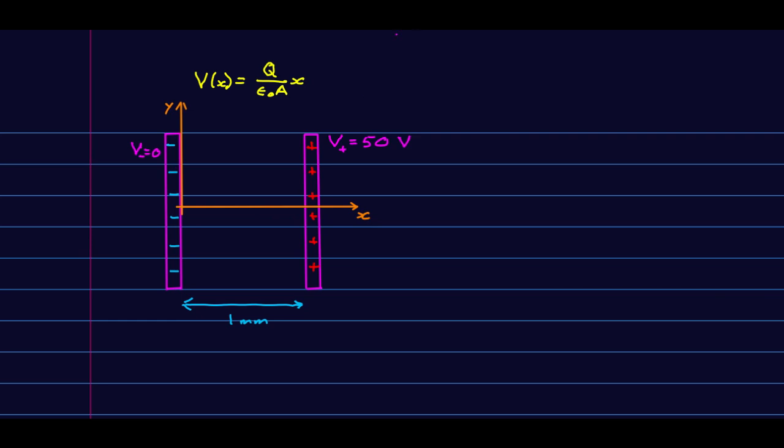Let's see how that looks in our simplest case, which is a parallel plate capacitor. Suppose we have a parallel plate capacitor, and we've defined the potential on the negative plate to be zero. Say it turns out that the potential on the positive plate is 50 volts, and the plates are separated by one millimeter.